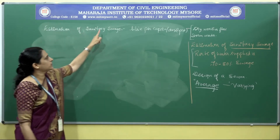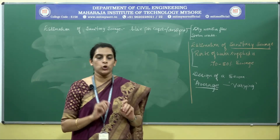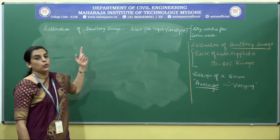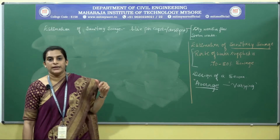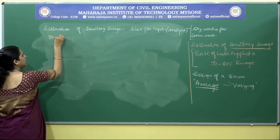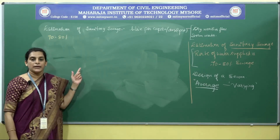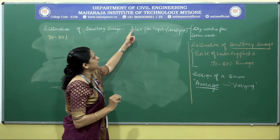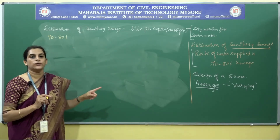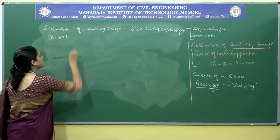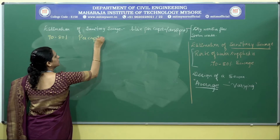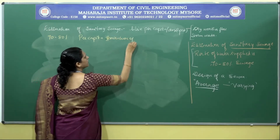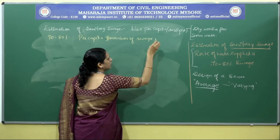The rate of sanitary sewage generated is usually expressed in liters per capita per day. Whatever water is supplied will be converted to sanitary sewage — around 70 to 80 percent of the water supplied. To estimate the average flow, we consider the sewage generated per capita per day at the beginning and end of the design period. The per capita generation of sewage is multiplied by the present population at the beginning of the design period.